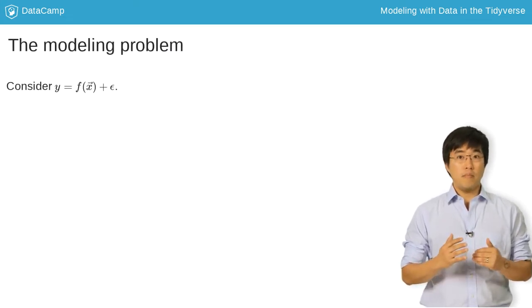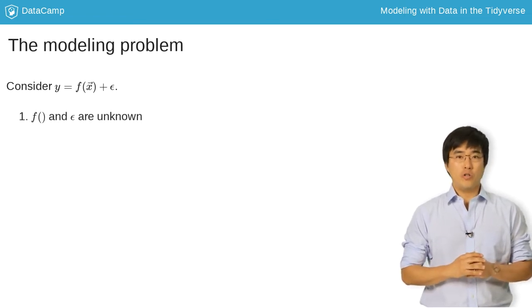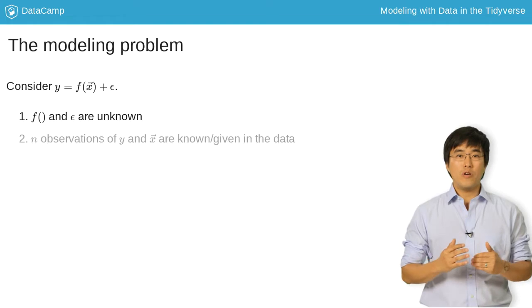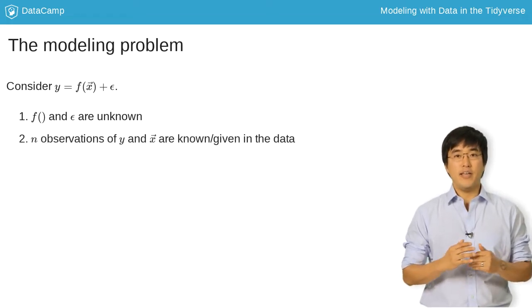Let's address some points about the modeling problem. Usually you won't know the true form of f, nor the mechanism that generates the errors epsilon. However, you will know the observations y and x as they are given in our data.